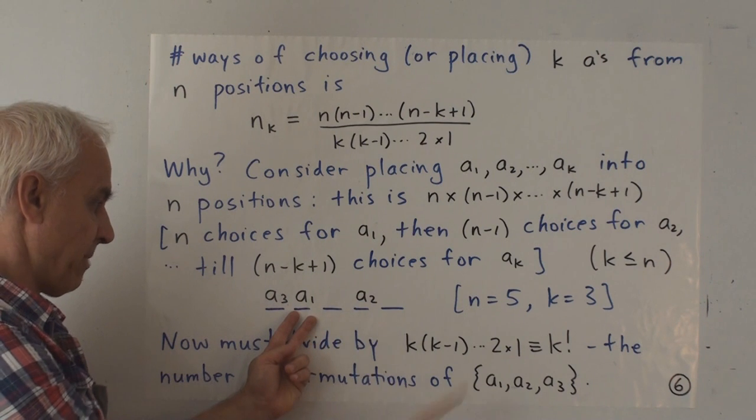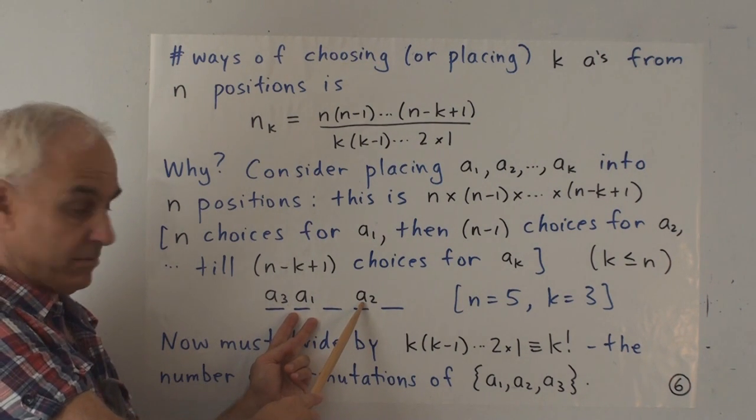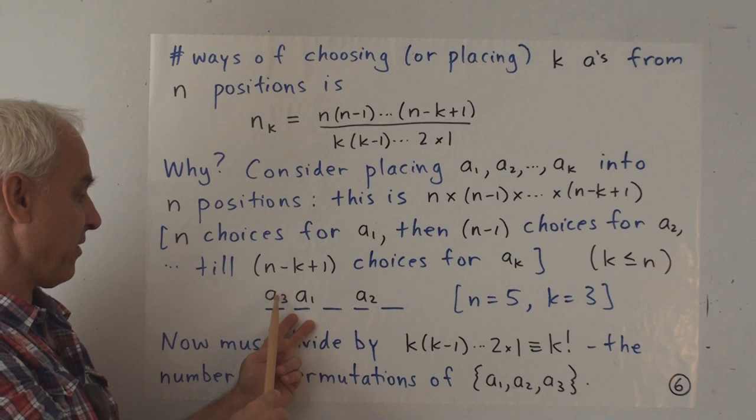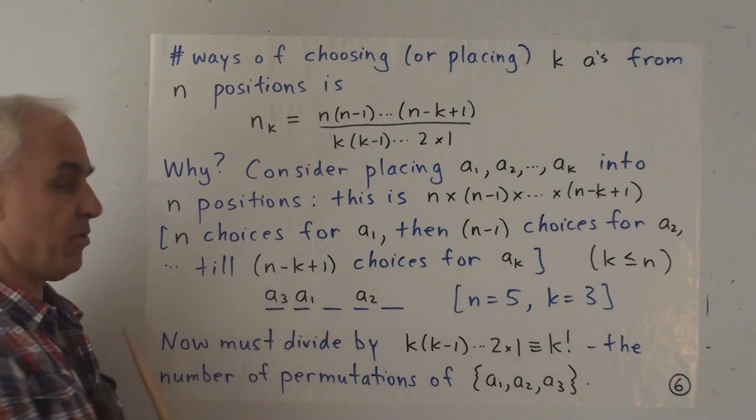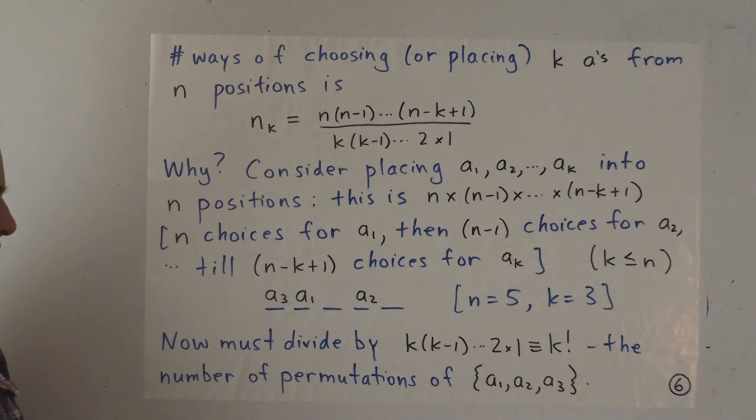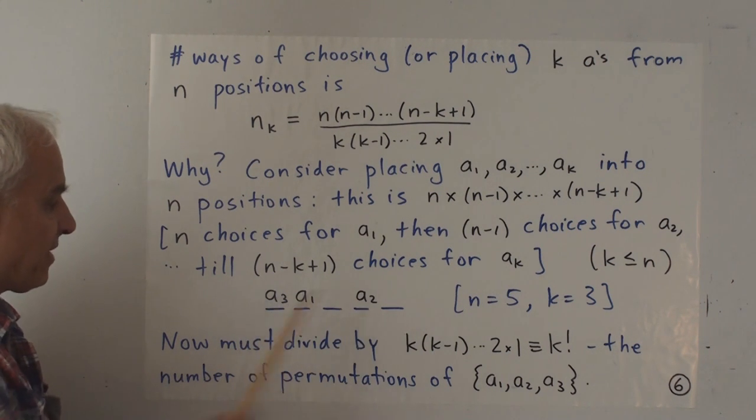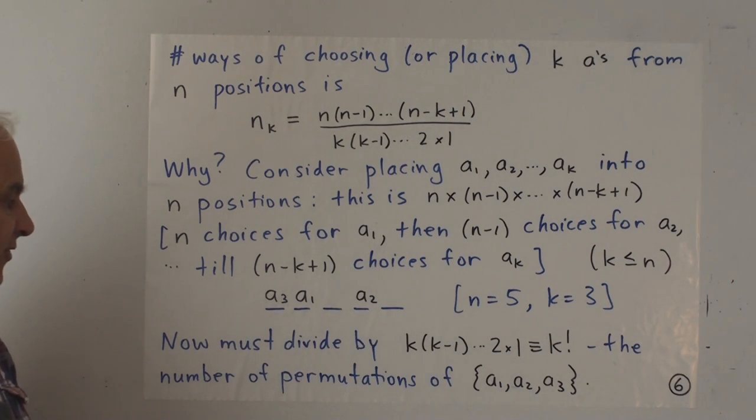And then after that, there's 3 choices for the a3. And we happen to put it there. So all together, 5 times 4 times 3 possible ways of putting in these 3 a_i's.